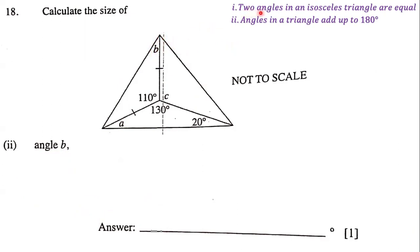First, two angles in an isosceles triangle are equal. And the second rule is that angles in a triangle add up to 180 degrees. Here, we are looking at an isosceles triangle. We know it's isosceles because it has these two strokes, which indicates that this side and this side are equal in measure. Since the two sides are equal, these two angles at the base are also equal.